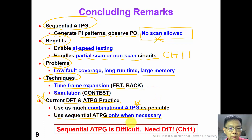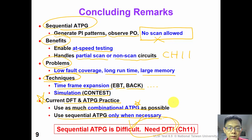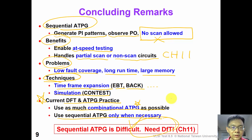In conclusion, sequential ATPG is quite difficult, which is why we need DFT to make ATPG easier. Please see chapter 11 for more details about DFT. Thank you for watching this chapter.